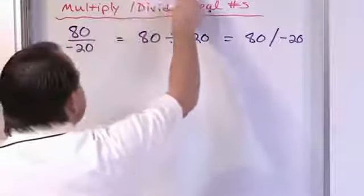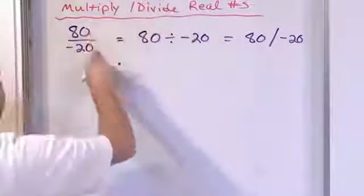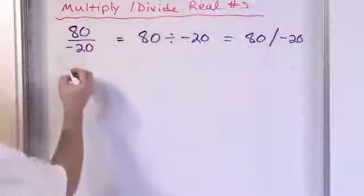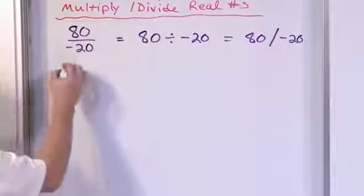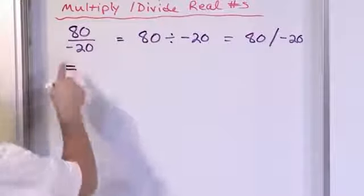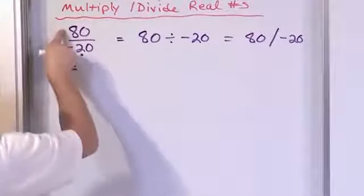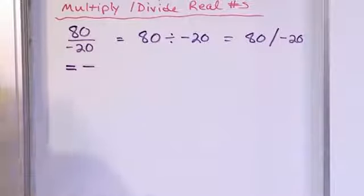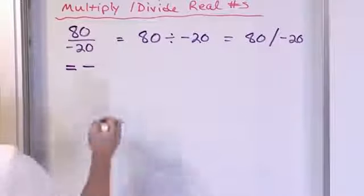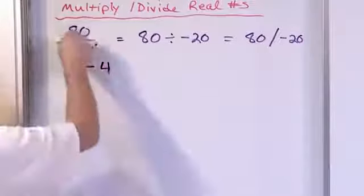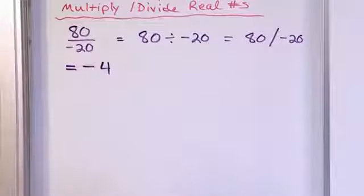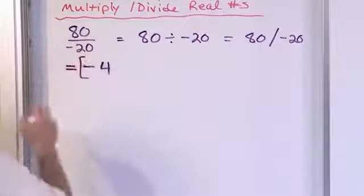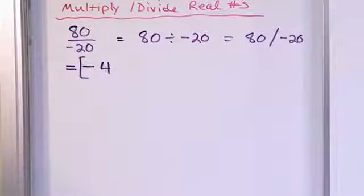We have a positive divided by a negative. That falls into the bucket where the signs are different, so the answer is always going to be negative. Since I have a positive divided by a negative, I put a negative sign there. 80 divided by 20 is 4, because 8 divided by 2 is basically 4. So the answer is negative 4.